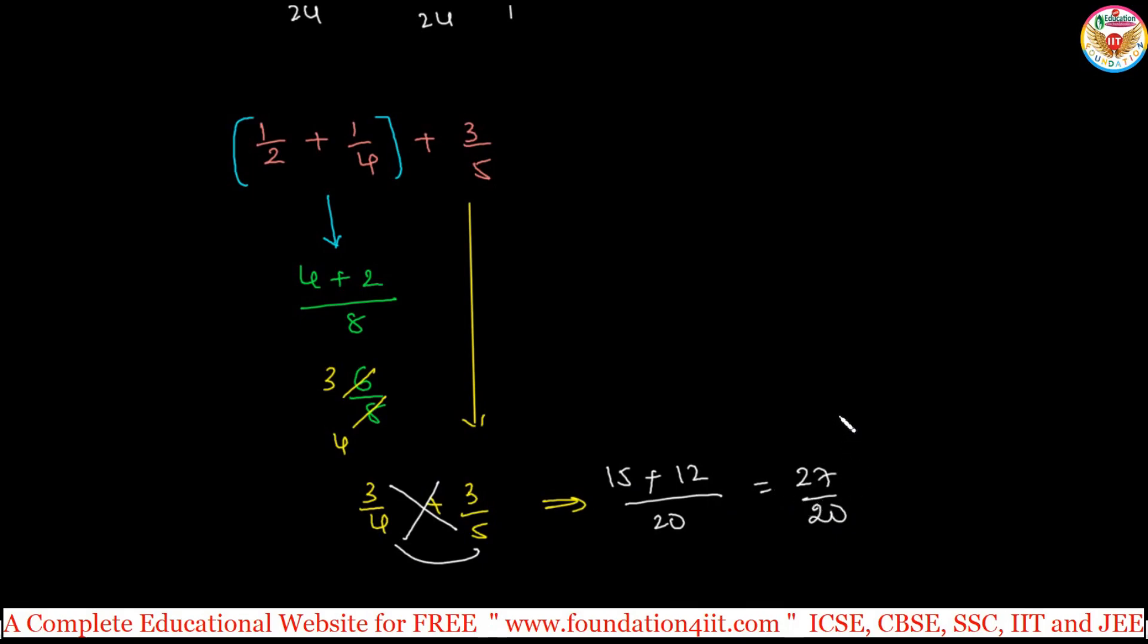If possible you can make it simplest form. Okay, see, even though same for subtraction also. Like 8 by 7 minus 8 by 2. Just instead of plus symbol, minus symbol. Same, always first fraction numerator into second fraction denominator. First fraction into second fraction denominator, 8 into 2 is 16. Again next, 7 into 8 is 56.